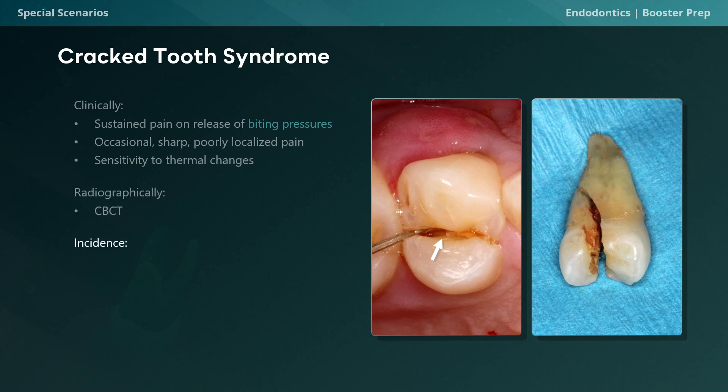Let's talk about the incidence of Cracked Tooth Syndrome. Permanent mandibular molars are the most commonly affected teeth, with recent research showing a greater incidence in the second molars, probably because of its close proximity to the hinge axis of the mandible. If you get closer to the TMJ, the masticatory efficiency increases, and so second molars will take a greater beating than teeth anterior to them.